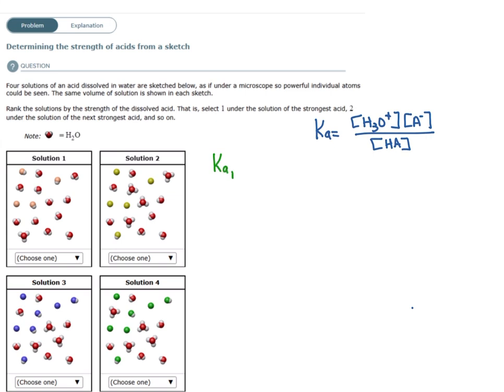So let's do the first solution. I'm going to count up all my H3O pluses. H3O pluses are the ones that have four atoms. So I see one. A minus is the one that has only one atom. I see one. And my HA is going to be the one that has two atoms. So one, two, three. So this gives me a value of 0.33.